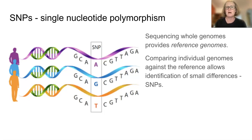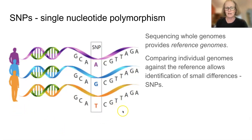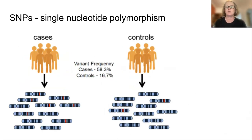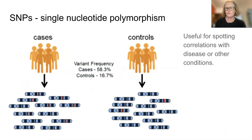Poly means many and morphism means shape, so SNPs are differences within the base sequence. As you can see in this diagram, there's just a single base change in the genome. These mutations happened in the past and they are what cause differences now. We can then use these differences to look for correlations with diseases or other conditions and see if we can do some predicting or some preventative work.